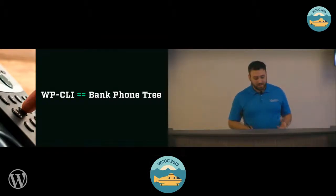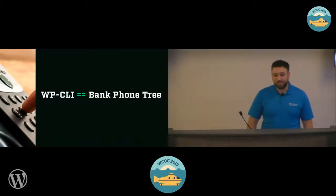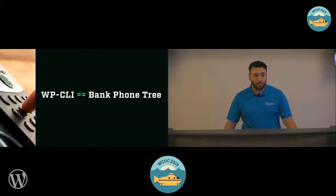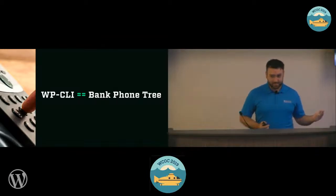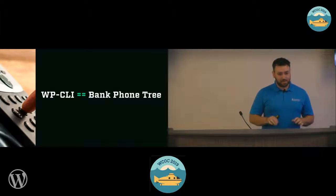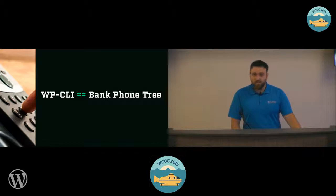I like to think of WP-CLI as similar to a bank's phone tree. When I call my bank, they ask me to authenticate with the last four of my social or account number — same way when I SSH into my server, I give an identity file and username. Once I'm in, I'm presented with a menu: press one to speak with a representative, press two for a status update, press three to file a fraud claim. Similarly, if I go into WP-CLI and type WP, I get a menu with all my options — posts, users, images, all the data stored in WordPress.